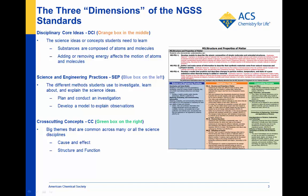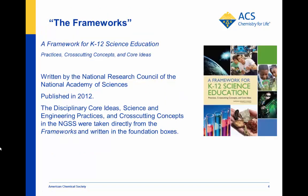A particular standard is made up of elements from these three foundation boxes. They're integrated to become the standard. The text in the foundation boxes comes from a 380-page report called A Framework for K-12 Science Education: Practices, Crosscutting Concepts, and Core Ideas. That report was published in 2012 by the National Research Council of the National Academy of Sciences. Everything in the NGSS, including all the appendices A through M, grows out of the framework.